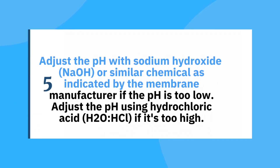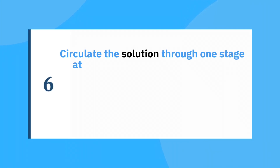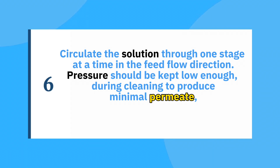Step 5: The pH of the solution should be checked, which should be around 12 or whatever the manufacturer recommends. Adjust the pH with sodium hydroxide (NaOH) or a similar chemical as indicated by the membrane manufacturer if the pH is too low. Adjust the pH using hydrochloric acid (HCl) if it's too high. Step 6: For 30 minutes, circulate the solution through one stage at a time in the feed flow direction, at the flow rate advised by the manufacturer. Pressure should be kept low enough to produce minimal permeate, but should never exceed 60 PSIG.